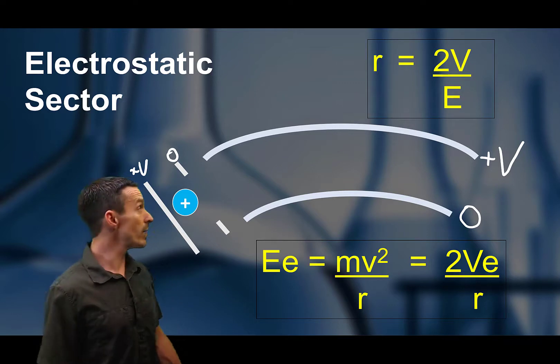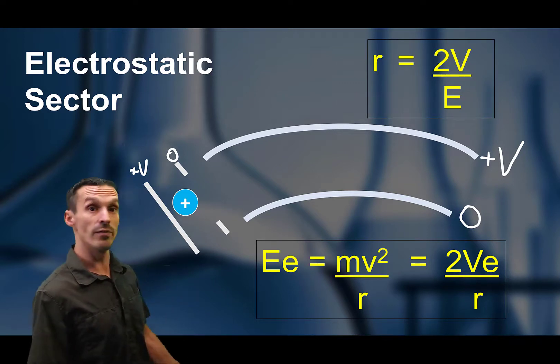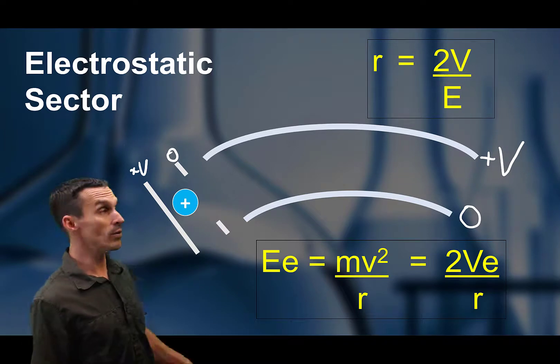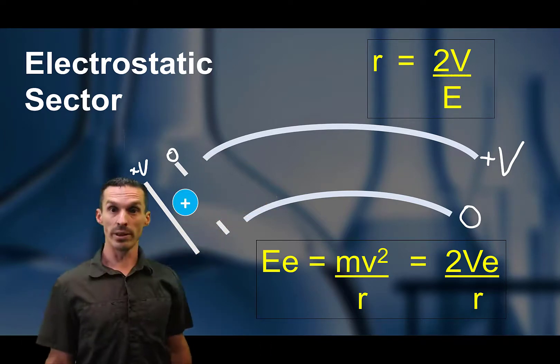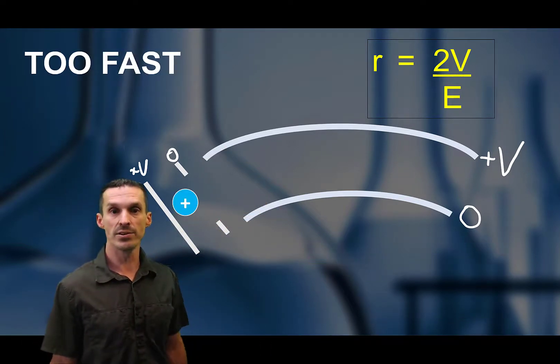Or we can say that the radius of curvature depends on the voltage that you're kicking the ions out, as well as the voltage of the electric field going down. So let's look at these different scenarios here.